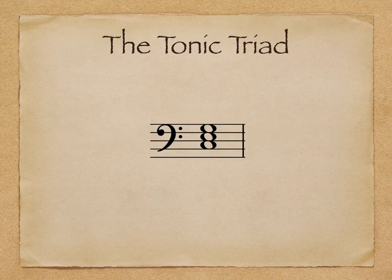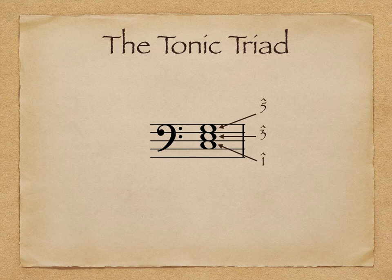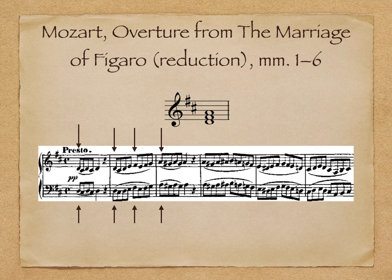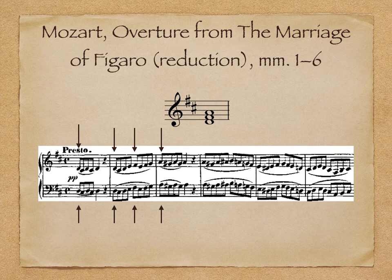In addition to building a scale surrounding scale degree 1, we can also build a chord on scale degree 1, called the tonic triad. It's made up of scale degrees 1, 3, and 5. While the tonic triad is a chord, its tones also frame motion throughout the scale. Scale degrees 1, 3, and 5 are the most stable, often used as starting points and goals of motion, while the other scale degrees are active and unstable. Look, for example, in this Mozart overture — the tonic triad is D, F sharp, and A, and it frames the motion through the first three measures. The motion between these stable points forms musical gestures. Have a listen.